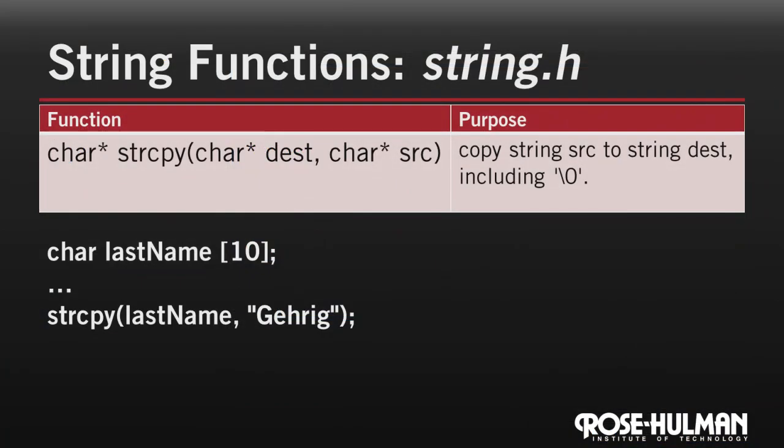Let's look at some library functions provided in the string header file. First is strcpy, or string copy. It takes two strings as parameters, a destination string and a source string, and returns the destination. As you probably guessed from the name, you use it to copy one string to another. Let's continue an example from earlier in this video. We've allocated some space for a string called last name, and then later we want to fill it with a string. We then use string copy to copy the source string, Gehrig, to the destination, last name. It copies it, including the null character, so that last name now equals Gehrig.